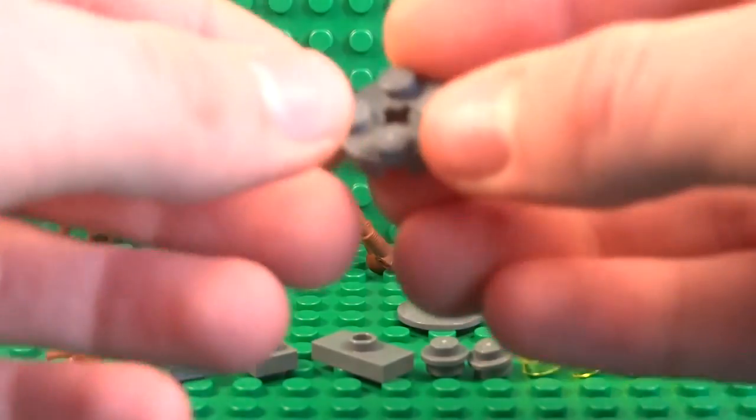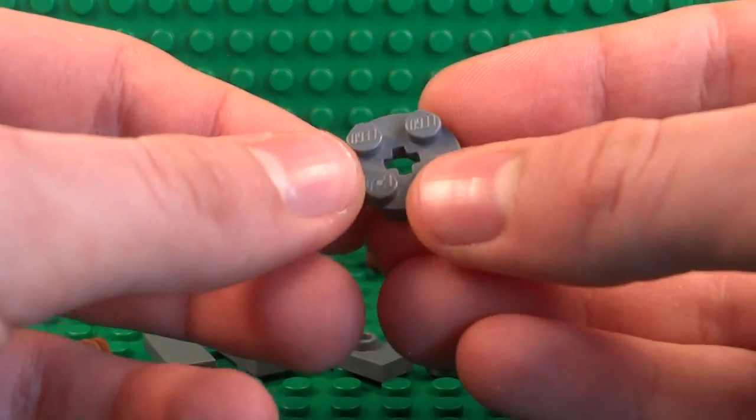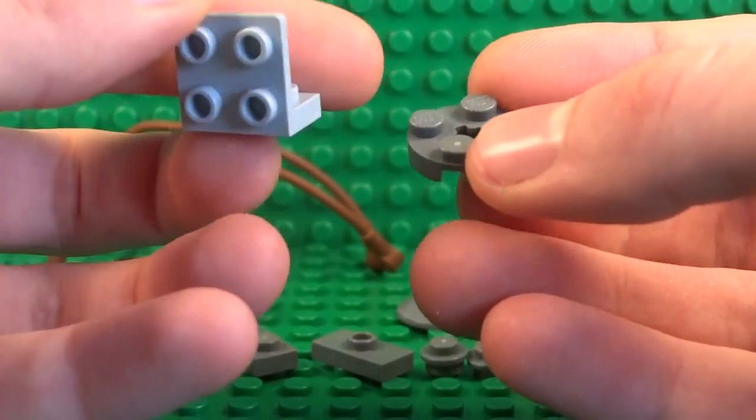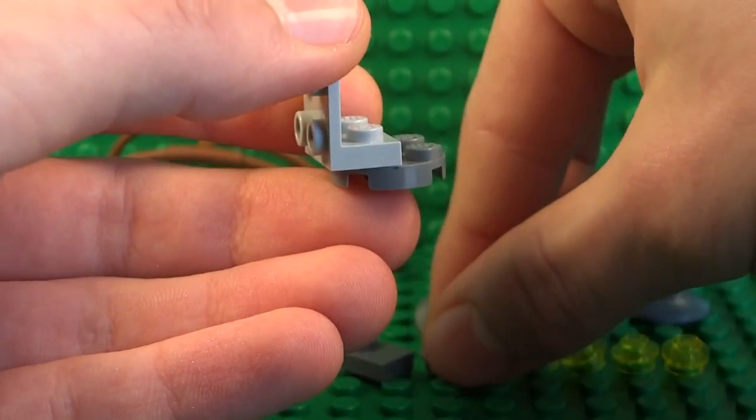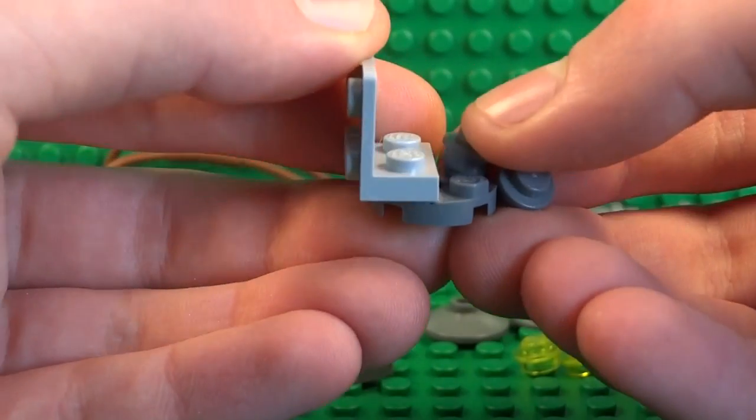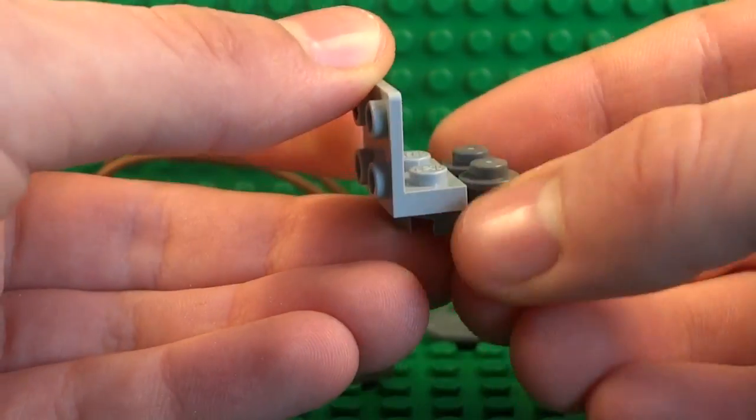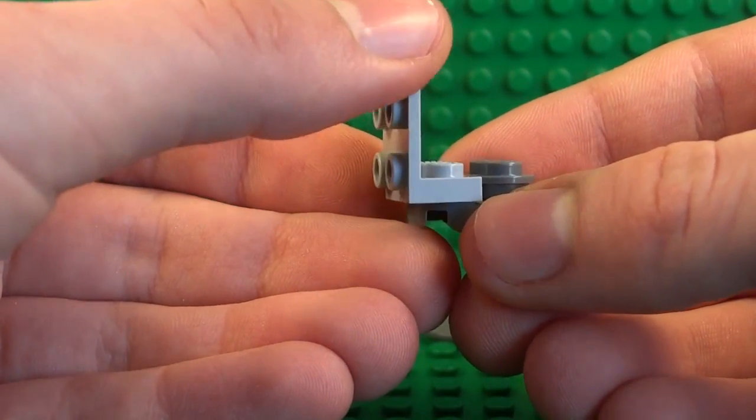So here's the pieces you're going to need to build the middle section. Once you have the pieces, you can start off by taking this 2x2 round plate and this inverted bracket piece and just place that on the top. Then take a couple of dark grey studs or you can also use a dark grey plate if you want and just place them there.